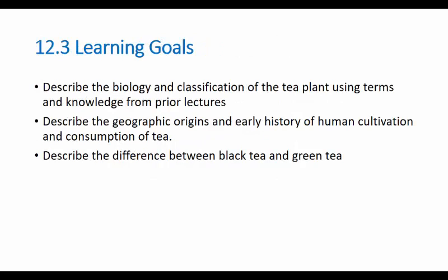Now let's move away from coffee and start talking about tea. What's going to be on the test: we'll describe the biology and classification of the tea plant, its geographic origins, human cultivation and consumption, and explain the difference between black tea, green tea, and oolong — similar to how we talked about coffee roasting, this is about the preparation process of the tea.